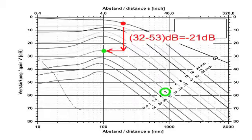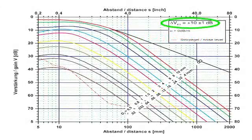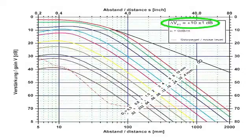When angle beam probes are used with the DGS method, normally there are no back walls available that are oriented perpendicularly to the sound beam. For this reason, one frequently uses the cylindrical surfaces of the standard reference blocks V1 and V2.